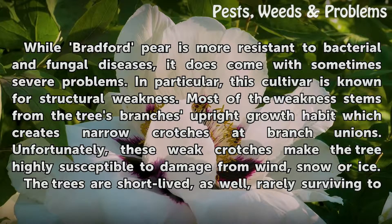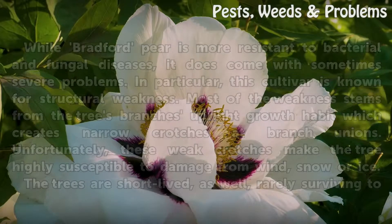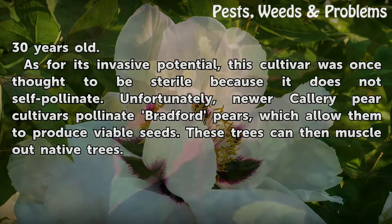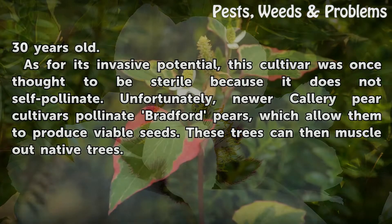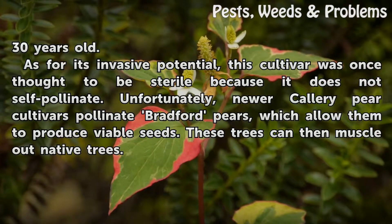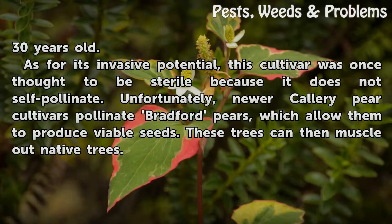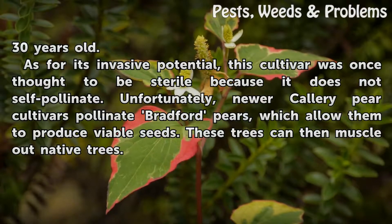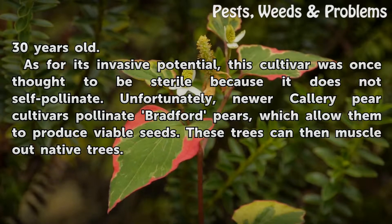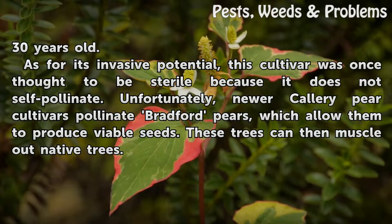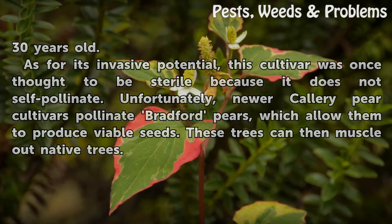The trees are short-lived as well, rarely surviving to 30 years old. As for its invasive potential, this cultivar was once thought to be sterile because it does not self-pollinate. Unfortunately, newer callery pear cultivars pollinate Bradford pears, which allows them to produce viable seeds. These trees can then muscle out native trees.